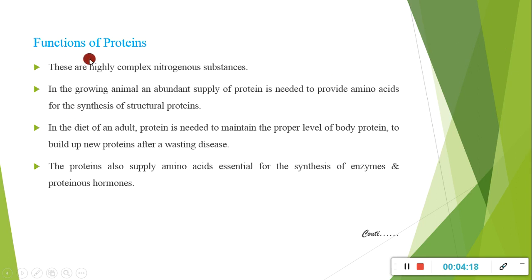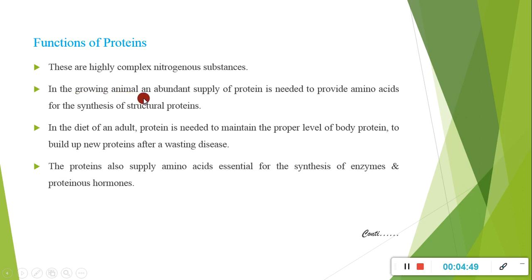Next is the function of protein. Proteins are highly complex nitrogenous substances made from different amino acids. There are basically 20 different types of amino acids, and the major element in proteins is nitrogen. In a growing animal, an abundant supply of protein is needed to provide amino acids for the synthesis of structural proteins.